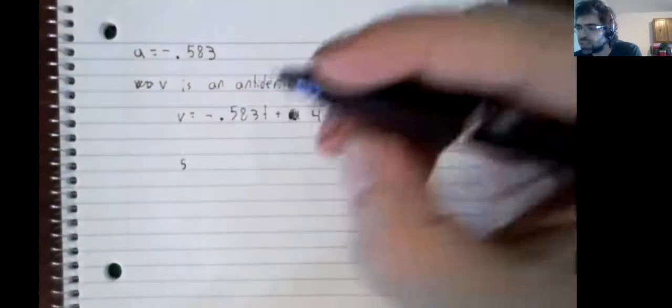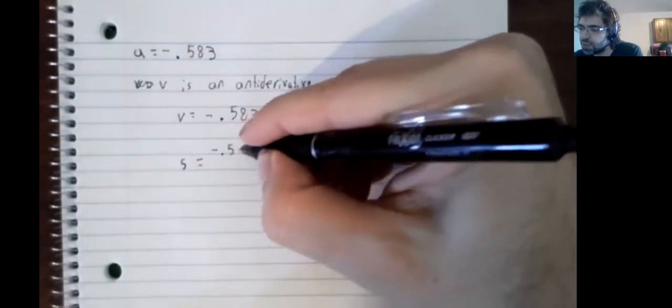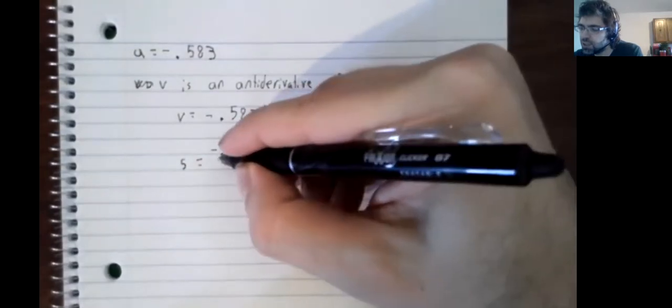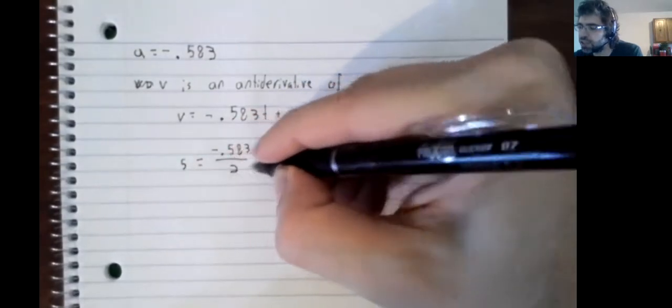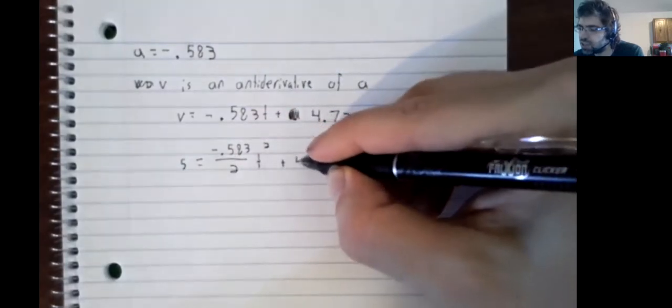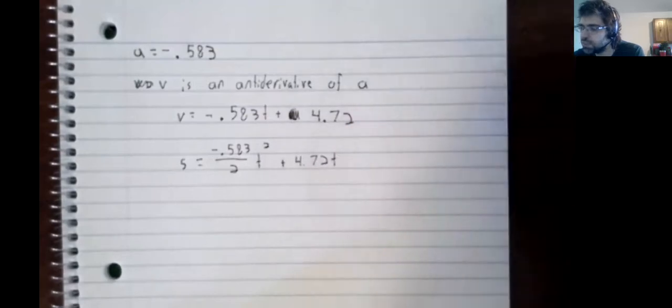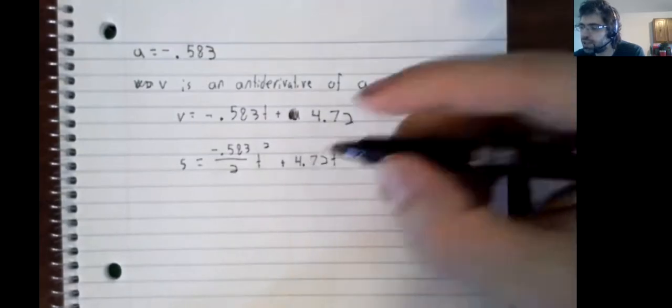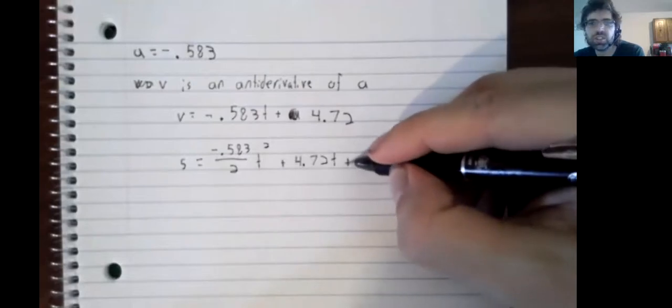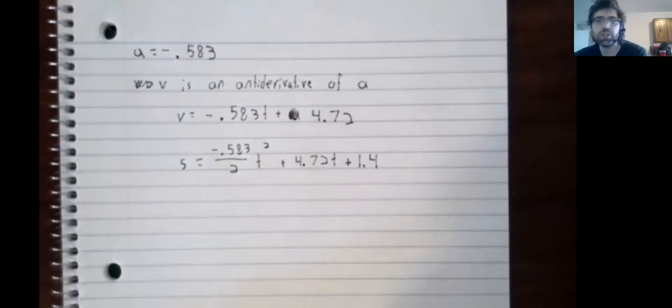And then the height is the anti-derivative of the velocity. And again, you have a constant. And the height at time 0 should be 1.4.